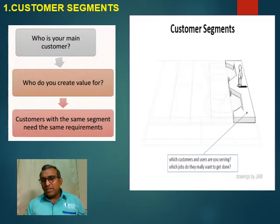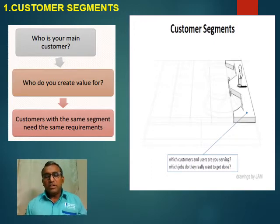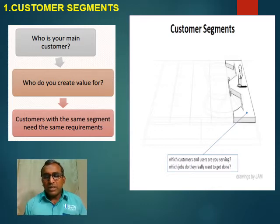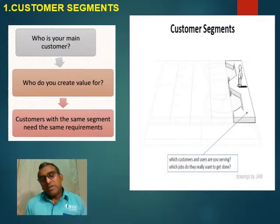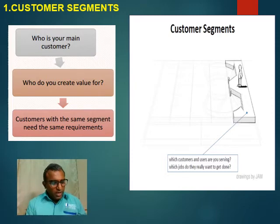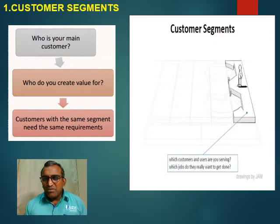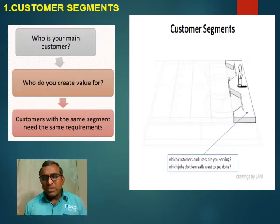To understand each block, we start with customer segment. I think best is if I use my own product as an example. It took at least five years to develop both of these products. For customer segment, this product is meant for what's called an aphrodisiac — for men who have sexual problems, and normally people who are above 40 have a lowering of the male hormone called testosterone.